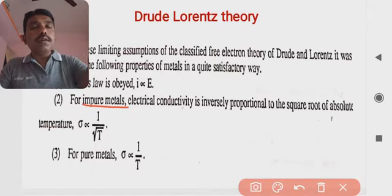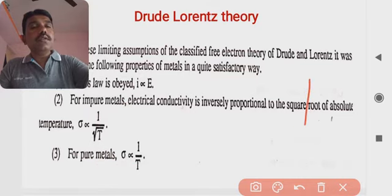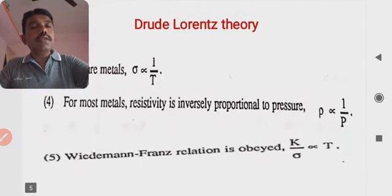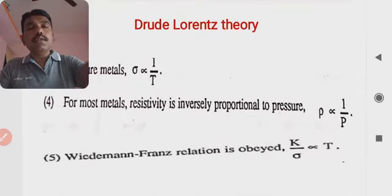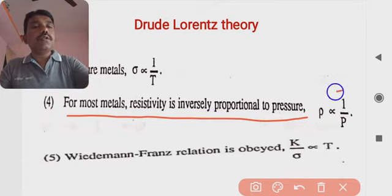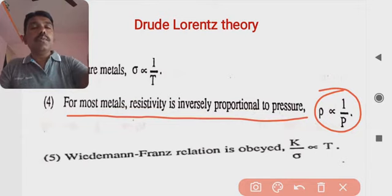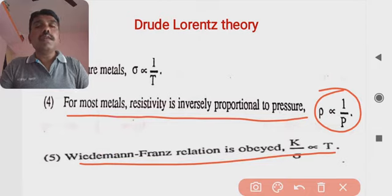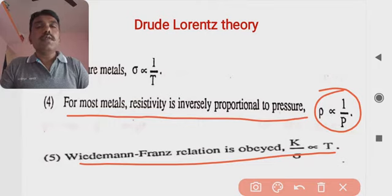So for impure metals, conductivity is inversely proportional to √T, while for pure metals it is inversely proportional to T. Additionally, for most metals, resistivity is proportional to pressure. The Wiedemann-Franz relation is also obeyed — the ratio of thermal conductivity K to electrical conductivity σ is directly proportional to absolute temperature. These five outputs represent the success of the Drude-Lorentz theory.